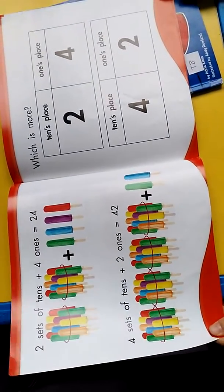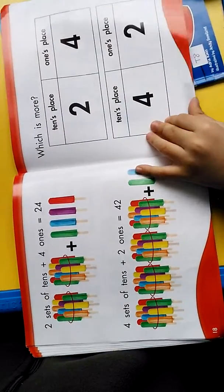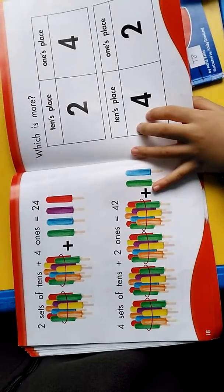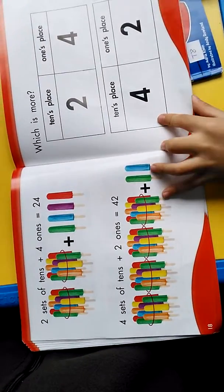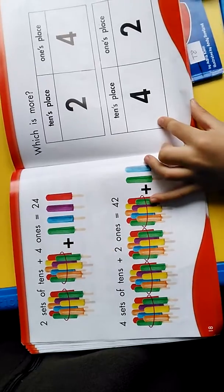Two sets of ten plus four ones equals twenty-four. Four sets of ten plus two ones equals forty-two.